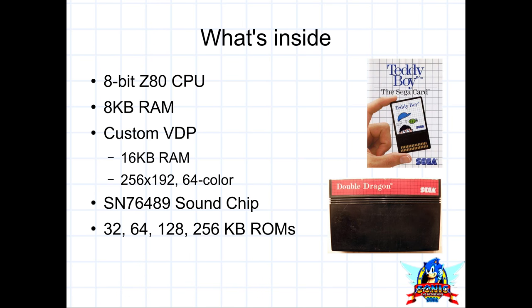So what's inside one of these things? Inside is an 8-bit Z80 CPU. It has 8 kilobytes of RAM, which is not very much at all by today's standards. It has a custom video processor — the VDP, the video display processor. On that processor there was 16k of RAM accessible only by that processor directly. It generated a 256 by 192, 64-color output, which is minuscule by today's standards. It had a fairly standard SN76489 sound chip and the way you plugged in games was via cartridges.